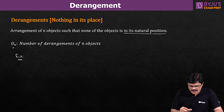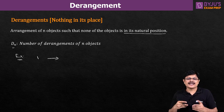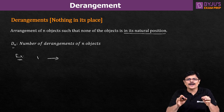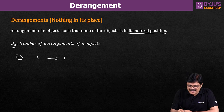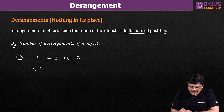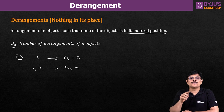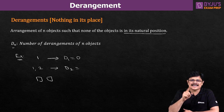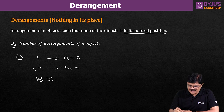Now suppose I have only one number. How many ways can you arrange it so that one is not in its position? Obviously, that cannot be possible. So d1 is zero. Now suppose I have two numbers — one and two. How many arrangements are possible such that no number is in its natural position? The first position should not have one, and the second position should not have two. So obviously two comes first and one comes second. This is the only possibility, so d2 equals one.